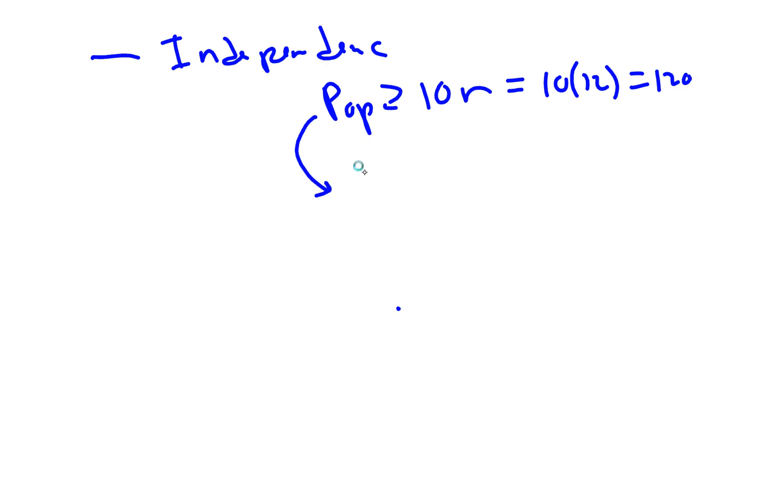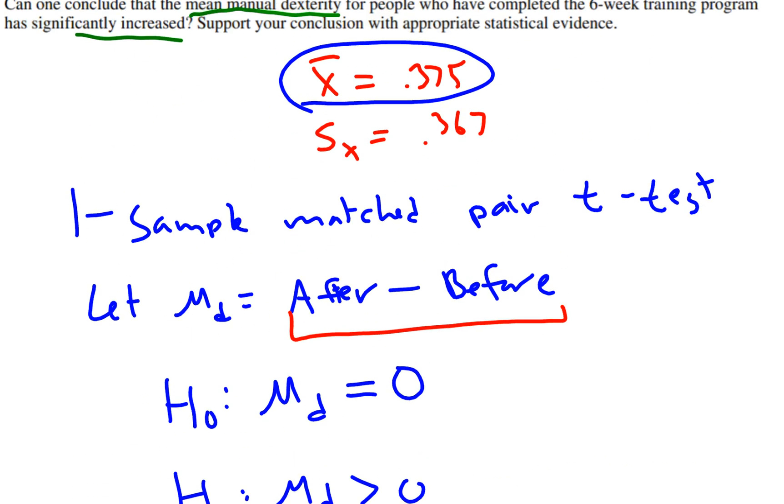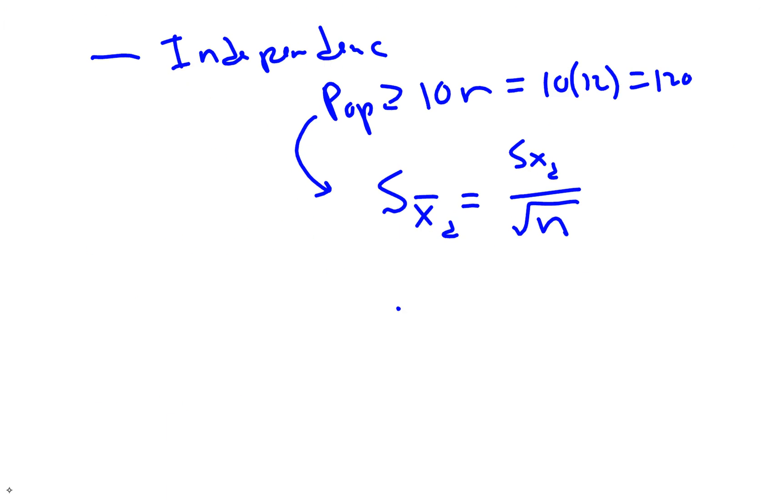If that's true, then we know that the standard deviation of X̄_d is equal to the standard deviation of the differences over the square root of the sample size. We calculated that standard deviation of differences using our calculator. That number is right here, 0.367. So let's plug that in, 0.367, and divide by the square root of 12, just like we always do.